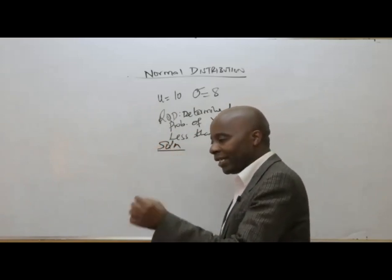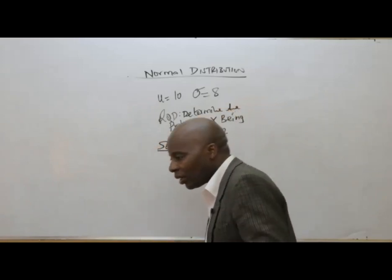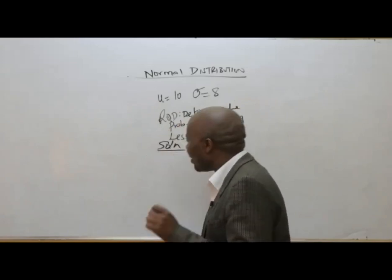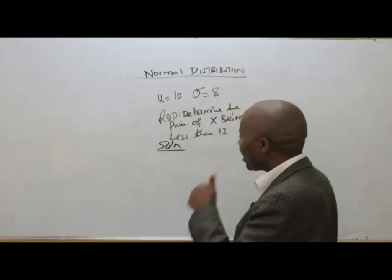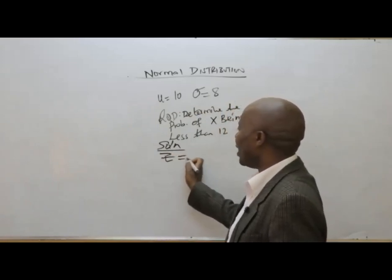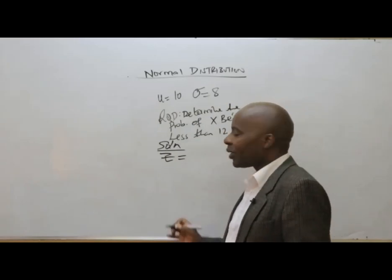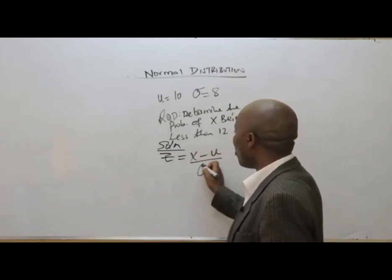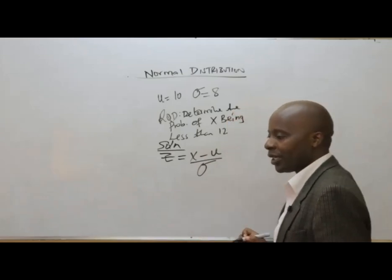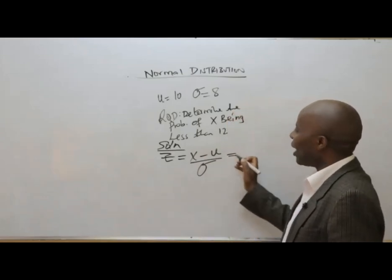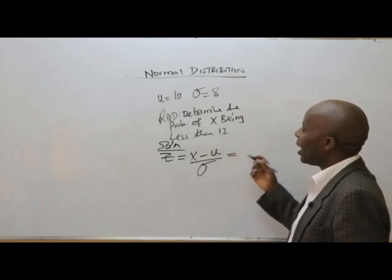The major thing here will be for us to standardize. So the solution: we standardize. We talk of the Z-score, so our Z will be X minus mu divided by the standard deviation.